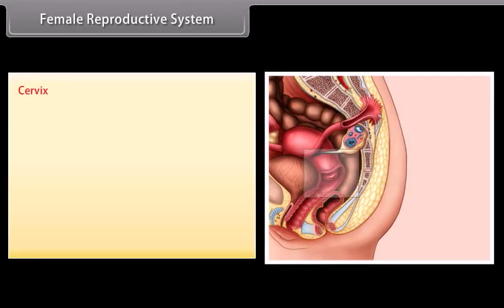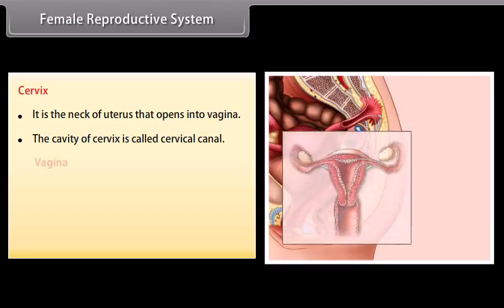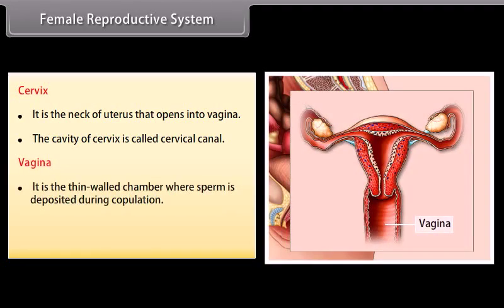The cervix is the neck of the uterus that opens into the vagina. The cavity of the cervix is called the cervical canal. The vagina is the thin-walled chamber where sperm is deposited during copulation. Along with the cervical canal, the vagina forms the birth canal.